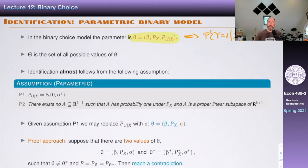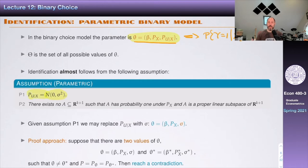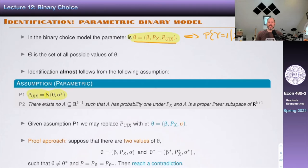The set capital Theta is the set of all possible thetas, which is a mix of finite-dimensional and infinite-dimensional parameters. Identification almost — and we'll see what 'almost' means — follows from two assumptions. P1 says the distribution of U conditional on X is known; here we assume it's normal with mean zero and variance sigma squared. P2 says there exists no set A in R^{K+1} such that A has probability one under P of X and A is a proper linear subspace of R^{K+1}. This is the general version of the no-perfect-collinearity assumption from the linear model.